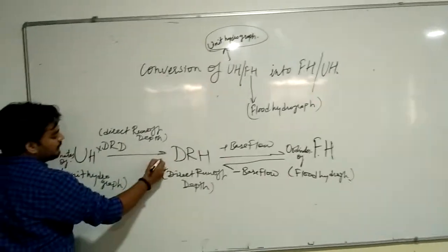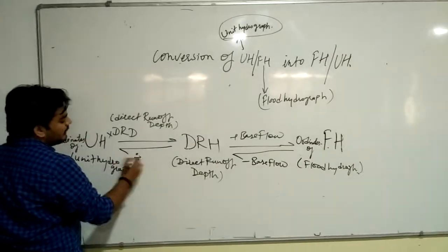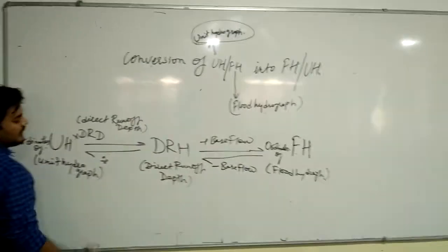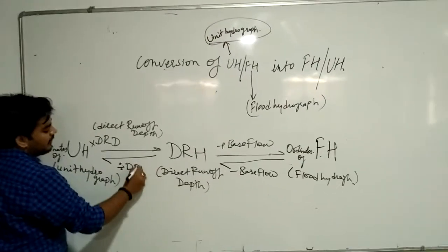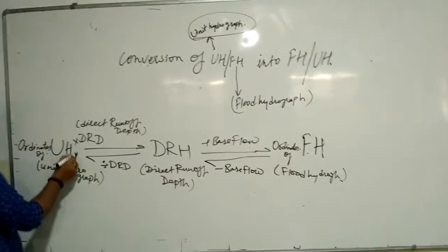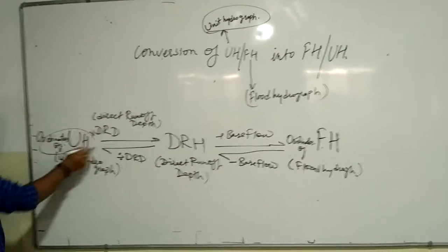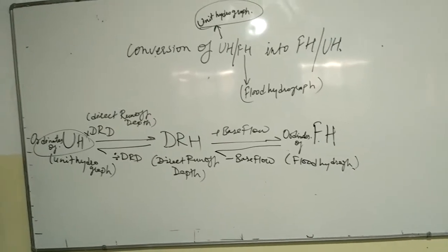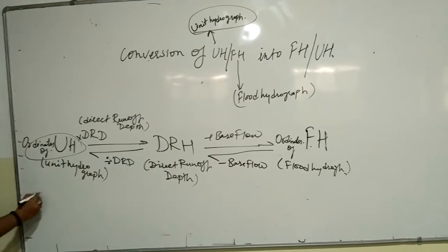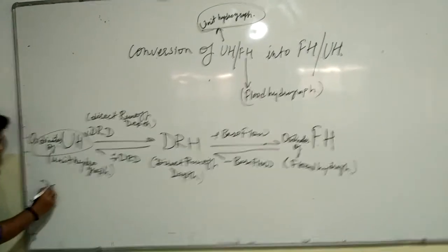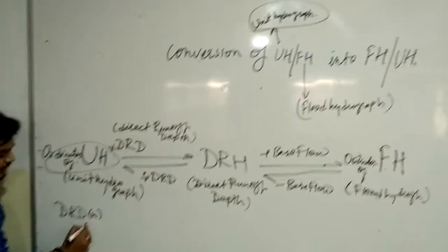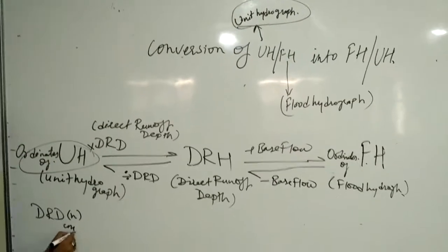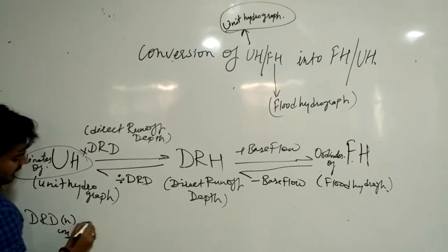From the flood hydrograph, subtracting base flow gives the DRH. Then the DRH ordinates divided by the Direct Runoff Depth (DRD) will give the ordinates of the unit hydrograph. How is DRD calculated? DRD is given in centimeters.